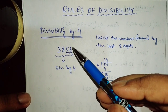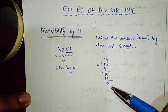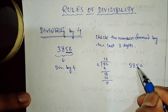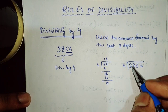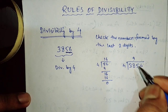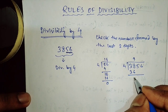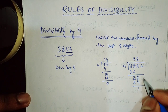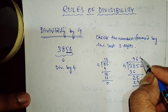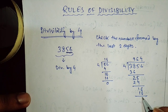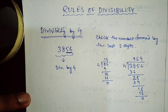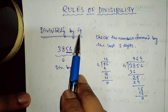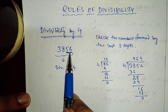That means if we divide this whole number 3856 by 4, we will get remainder 0. You can verify: dividing 3856 by 4 gives remainder 0. So in order to check a full number whether it is divisible by 4 or not, we just need to check the last two digits.